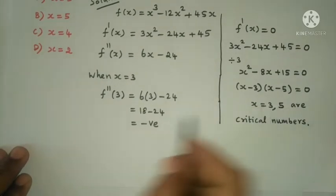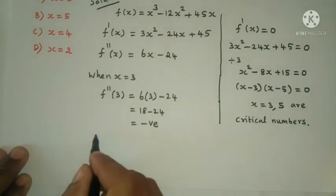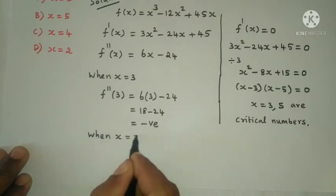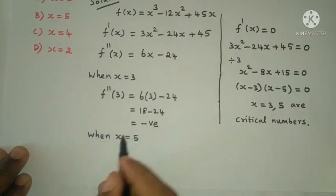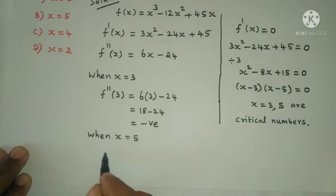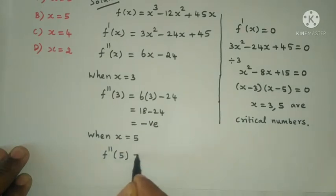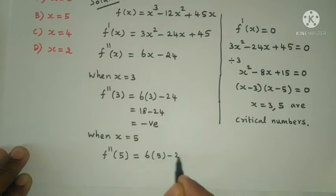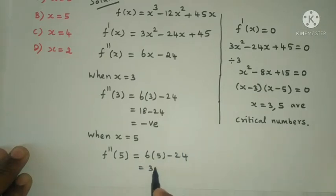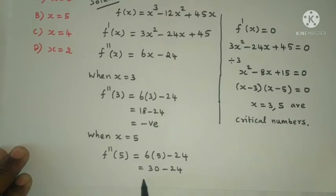Now substituting x equals 5 into f''(x): f''(5) equals 6 times 5 minus 24, which equals 30 minus 24 equals plus 6, which is positive.